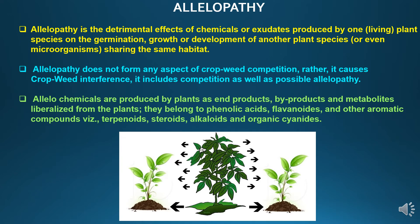Now we will go through indirect crop-weed competition, where allelopathy is one of the important concerns. Allelopathy is the detrimental effect of chemicals or exudates produced by one living plant species on the germination, growth, or development of another plant species or even on microorganisms sharing the same habitat. Allelochemicals are produced by plants as end products, by-products, and metabolites liberated from the plants, and they may belong to phenolic acids, flavonoids, and other aromatic compounds like terpenoids, steroids, alkaloids, and organic cyanides.